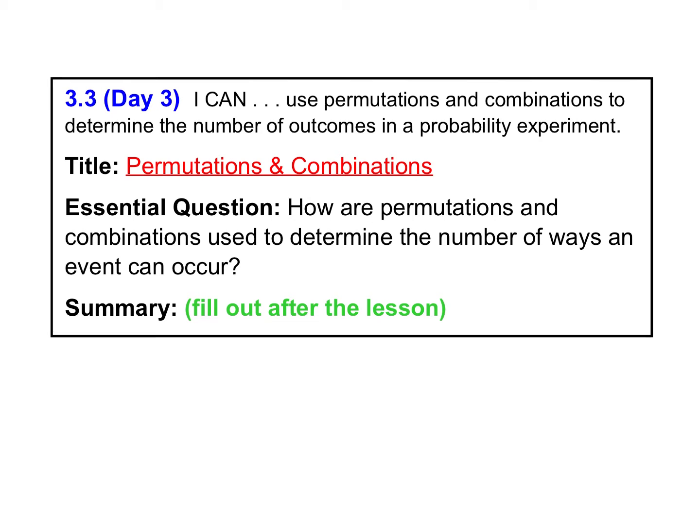Hello, today we're going to be looking at lesson 3.3, day 3, on permutations and combinations. In 3.3 day 1, we looked at permutations, and in 3.3 day 2, we looked at combinations. Today, we're going to put both together, and we're going to practice first determining whether a problem is a permutation problem or a combination problem, and then using either the permutation or the combination to determine the number of ways the event can occur.